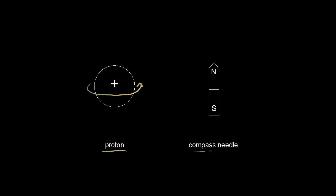Let's look at a compass needle, which has two poles — a north pole and a south pole. The compass needle is like a tiny bar magnet, and we can draw the magnetic field lines going from the north pole to the south pole.